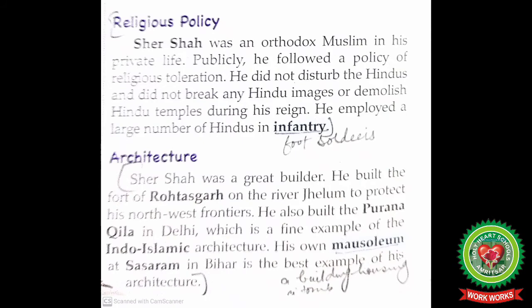Sher Shah was an orthodox Muslim — orthodox means strict — in his private life, but publicly he followed a policy of religious tolerance towards the Hindus. He did not disturb the Hindus, did not break any Hindu images, or demolish — meaning destroy — any Hindu temples during his reign. He employed a large number of Hindus in his infantry. He also placed Hindu generals like Brahmajit Gaur in his army.